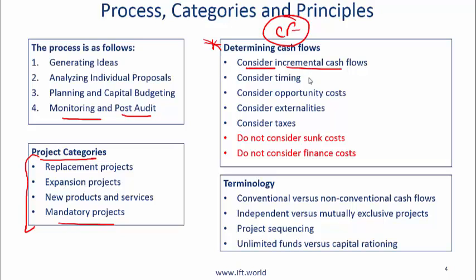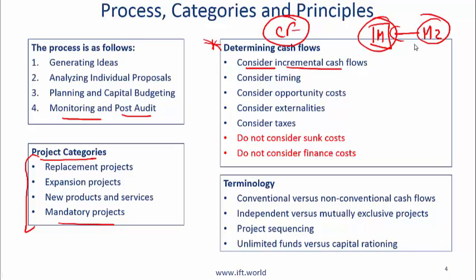You need to consider incremental cash flows. If you are doing a replacement project, for example, you have a machine M and you are replacing it with another machine M2. What you need to look at is the incremental costs — if you sell the old machine and get a salvage value and the new machine costs more money, it's the incremental or differential amount that you consider. And then every year you ask: because of this project, what is the incremental cash flow?